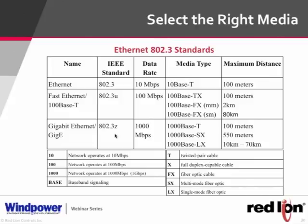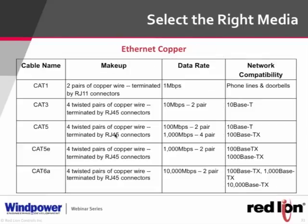Copper distance remains at 328 feet (100 meters) regardless of speed increase. For fiber at gigabit speeds: SX (multi-mode short haul) supports up to 550 meters; LX (single-mode long haul) supports 10 km to 70 km. Copper categories started with CAT1, rooted in the telephone industry's use of twisted pair.